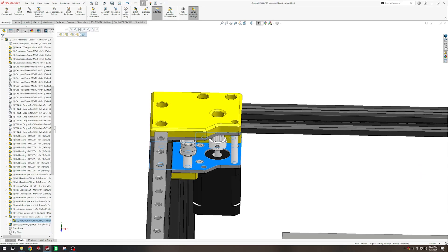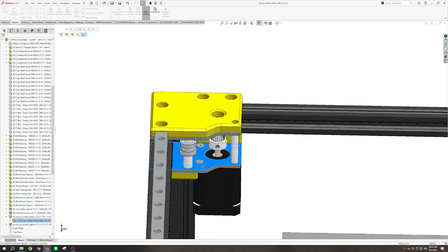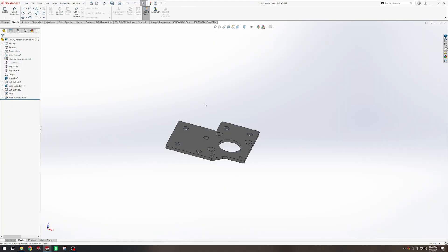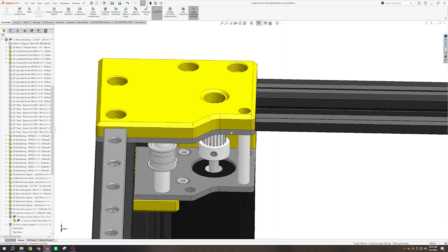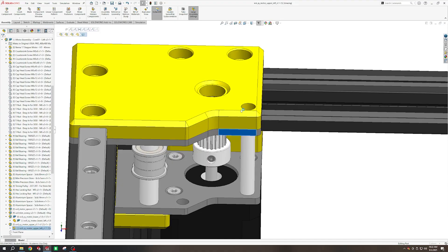Do you ever find yourself in a project thinking, hmm, I could probably make that? So do I. And in today's episode, we're going to be using the Carvera Air to create some custom aluminum plates for the Hive 3D printer.